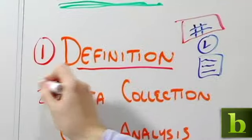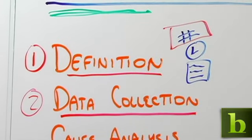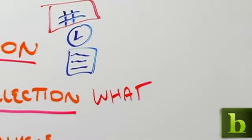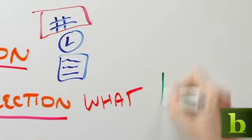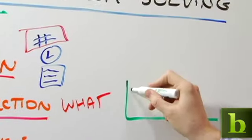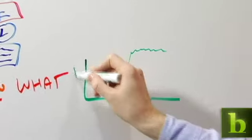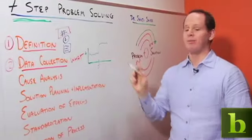Now we move to step two. Step two is data collection. Data collection answers the question of what is going on? So if we're thinking about number of calls, let's look at a graph. Let's look at number of calls over time. Maybe we determine that yes, in fact, somewhere around June of last year, the number of calls went up. Now we have some data.